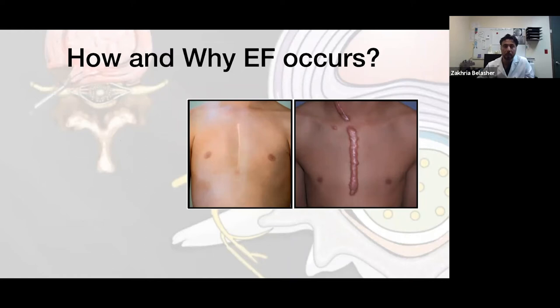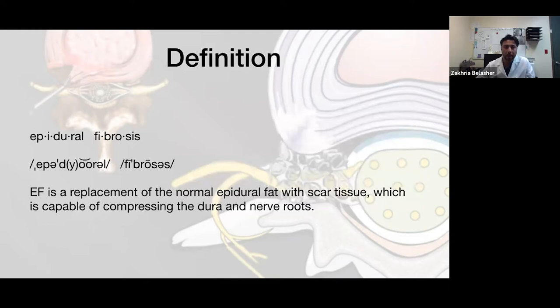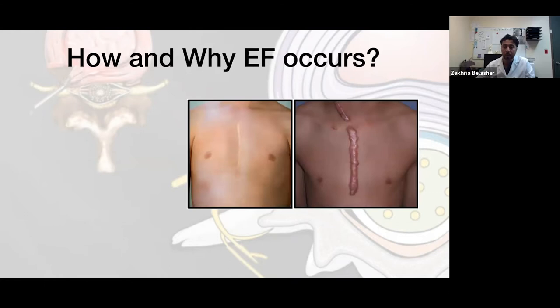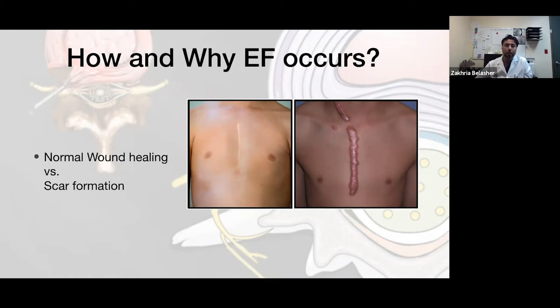How and why does this fibrosis happen? This is something that has been investigated for almost a century. The first time post-operative fibrosis was documented in the literature was about 1936. At that time, Hodgkin found the first adhesions and called it fibrosis. At that time, they didn't know exactly how that fibrosis happened — why some patients end up with an ugly scar and why others have normal healing.